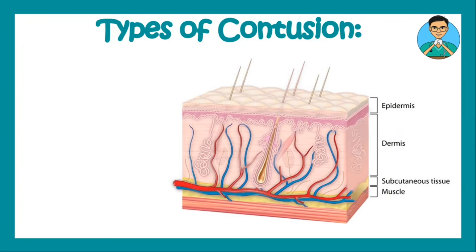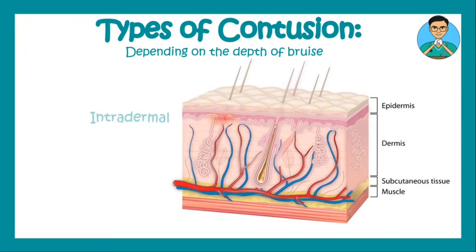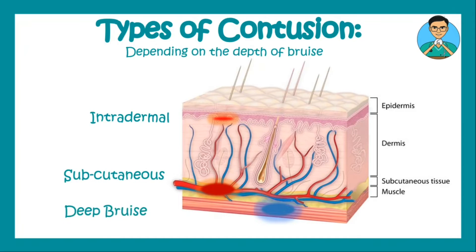Based on the depth of the bruise we can have three different types of contusion: it can be intradermal, subcutaneous, or a deep bruise. The deep bruise takes some time to appear and hence is also known as delayed bruising.